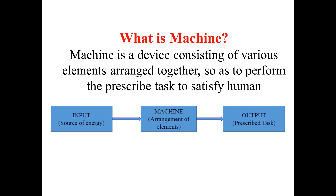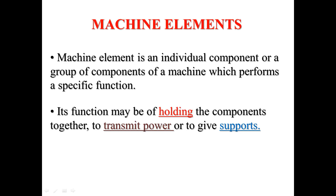In the first lecture of basic mechanical engineering, we start with the fundamentals of unit one: introduction to mechanical engineering. The first question is: what is a machine? A machine is a device consisting of various elements arranged together to perform a prescribed task or to satisfy human needs. In short, a device which performs a prescribed task with some input is called a machine.